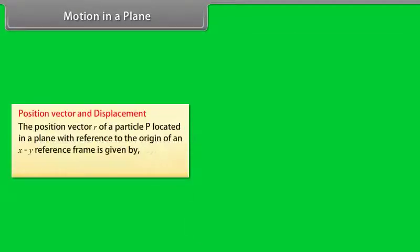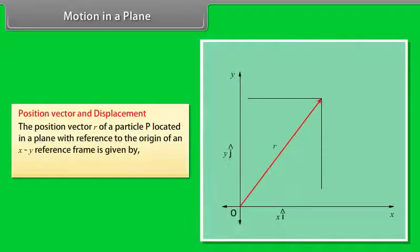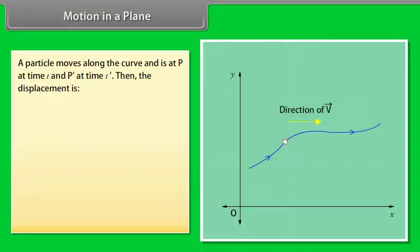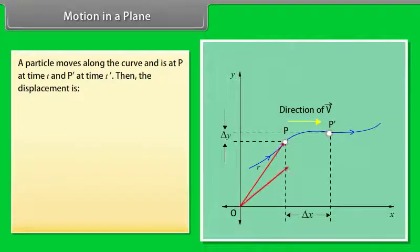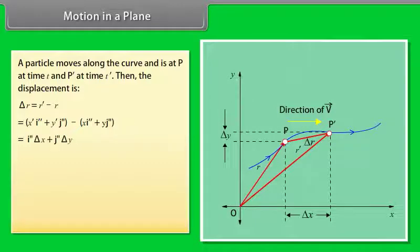Motion in a plane. Let's see motion in two dimensions using vectors. Position vector and displacement: The position vector R of a particle P located in a plane with reference to the origin of an XY reference frame is given by R equals X i-hat plus Y j-hat. A particle moves along the curve and is at P at time T and P' at time T'. Then the displacement is Δr equals r' minus r. By putting values we get Δr equals i-hat Δx plus j-hat Δy.